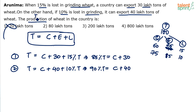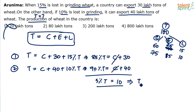Subtract: 90% of T minus 85% of T gives 5% of total. The consumption C gets cancelled, leaving 5% of T equals 10. Which implies total T equals 200. If 5% is 10, total will be 200. So 200 lakh tons, option 3 is the final answer. 5% of the total production is 10, so 100% will be 200.